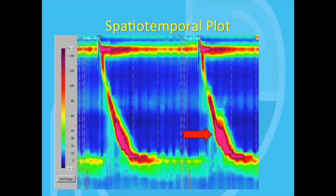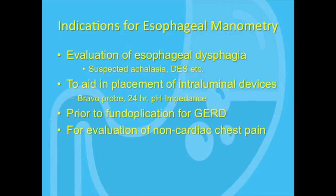What are the main indications for an esophageal manometry study? The most common situation is when we are evaluating motor-type cases of dysphagia. We also use it to aid in the placement of intraluminal devices such as a Bravo probe or when doing a 24-hour pH study, where it's important to know where the lower esophageal sphincter is. It is commonly ordered prior to surgery for gastroesophageal reflux disease and for evaluation of non-cardiac chest pain.